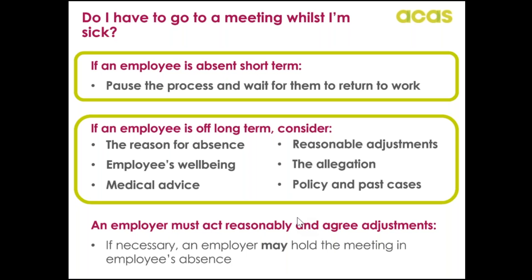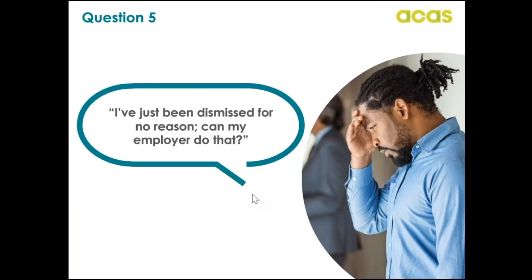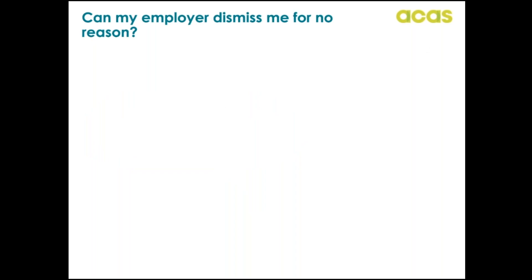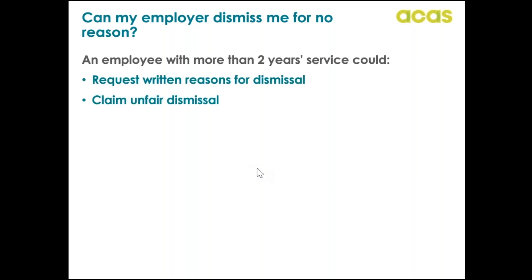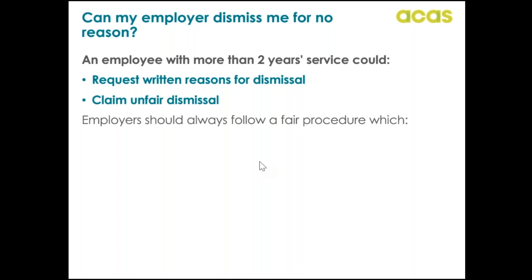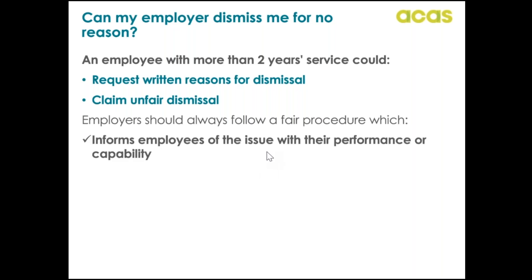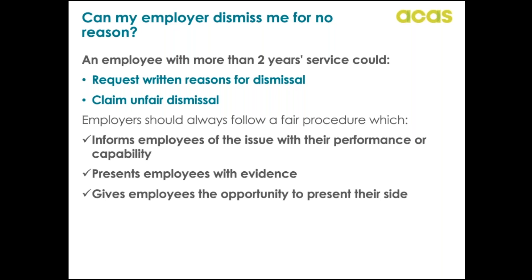The next question, frequently asked by employees: 'I've just been dismissed for no reason — can my employer do that?' It might be that the employer genuinely has not provided a reason, and in this case there is a risk to the employer especially if the person has more than two years of service. After two years, an employee has the right to request written reasons for dismissal and can make a claim of unfair dismissal. Good practice is to always follow a fair disciplinary procedure before any sanction such as dismissal is reached — the employee should be informed of the issue, presented with evidence, and given the opportunity to present their side.